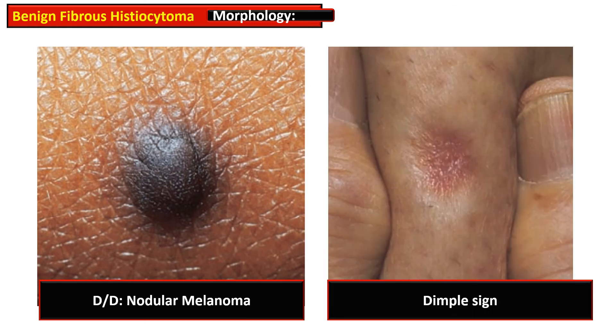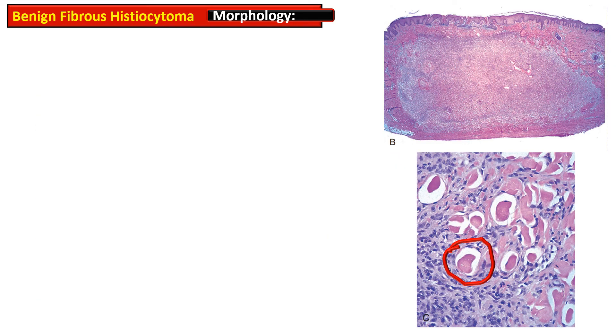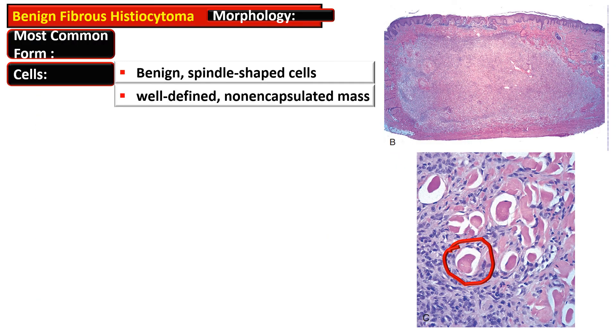This is a dome-shaped lesion — a nodule firm in consistency. This lesion is pigmented and mimics nodular melanoma, which is an important differential for dermatofibroma. When lateral compression is applied to the lesion, it produces a depression or dimpling. This is called the dimple sign.